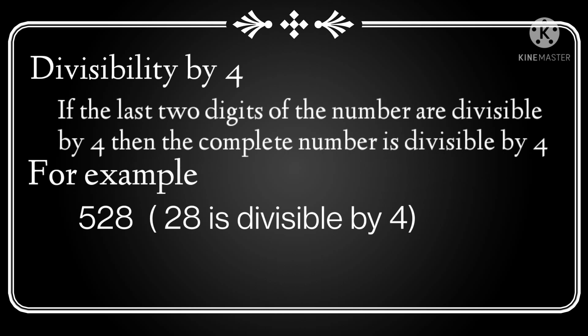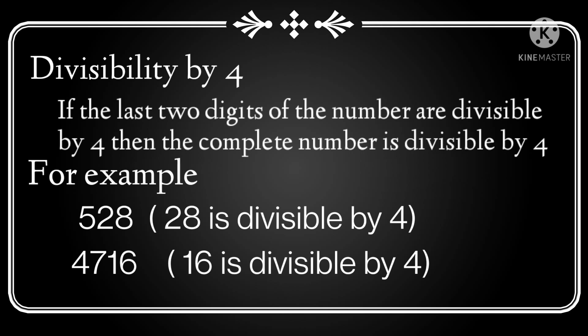Let's take one more example: 4,716. Again, look at the last two digits — 16. Since 16 is divisible by 4, the whole number is divisible by 4. So for large numbers, it is very easy to check divisibility by 4 by just looking at the last two digits of the given number.